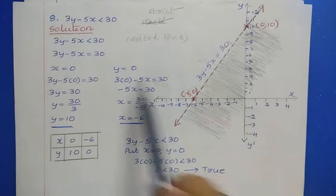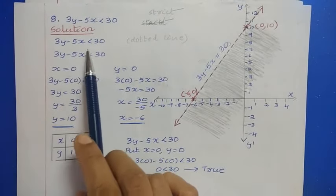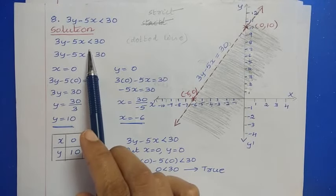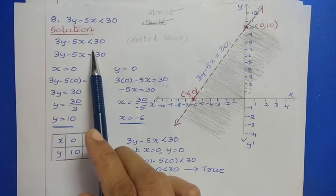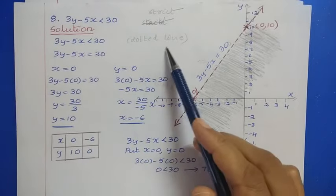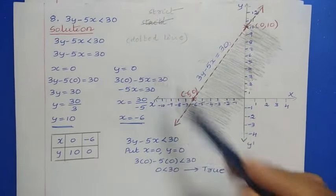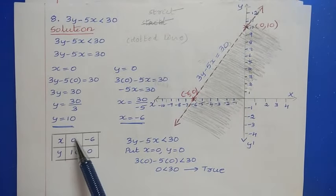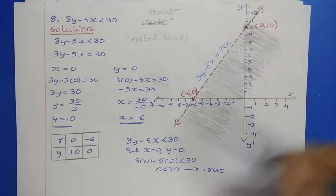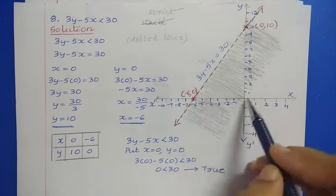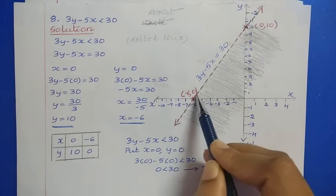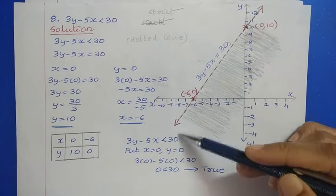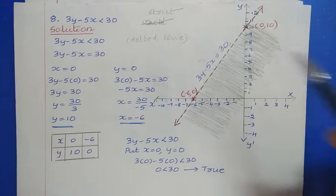When you have a strict inequality — less than or greater than — you must use a dotted line. Locate the points: (0, 10) and (-6, 0). Draw a dotted line through these two points.